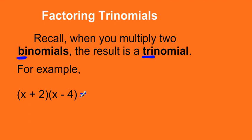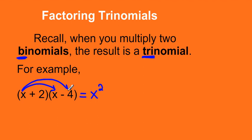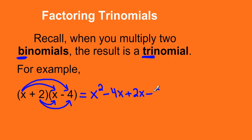So let's see what happens when we multiply these two binomials. If we use the FOIL rule to expand this, we're going to look at the first two terms: x times x, which gives us x squared. The O in FOIL stands for outside, so we're going to be looking at the two outside terms — x times negative 4 is negative 4x.